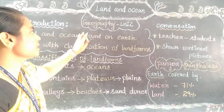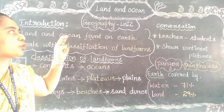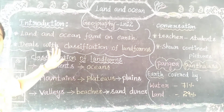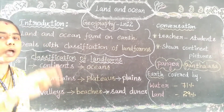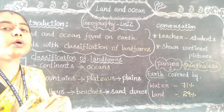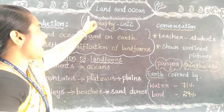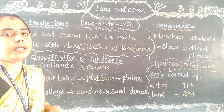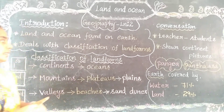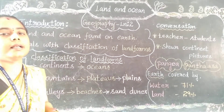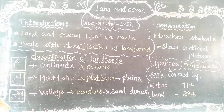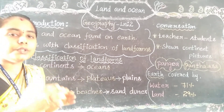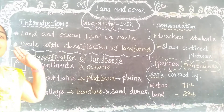This is your geography lesson. We are going to focus on land and ocean. In this lesson there are four objectives which we are going to learn. First, to understand land, ocean, and continents. Second, to differentiate between landforms and ocean. Third, classification of landforms. And the fourth objective is to understand the ocean and its features.